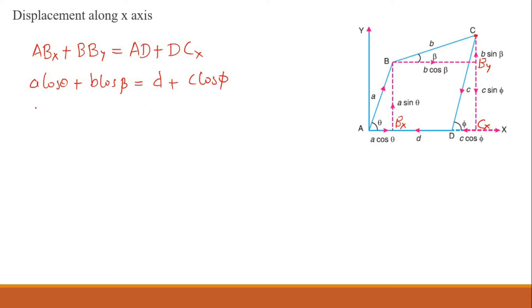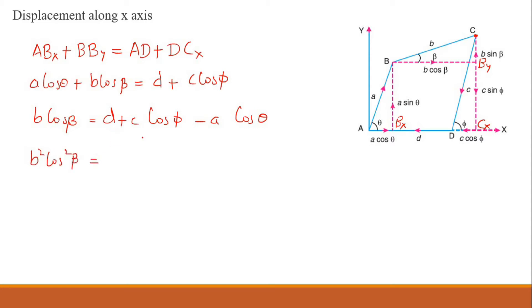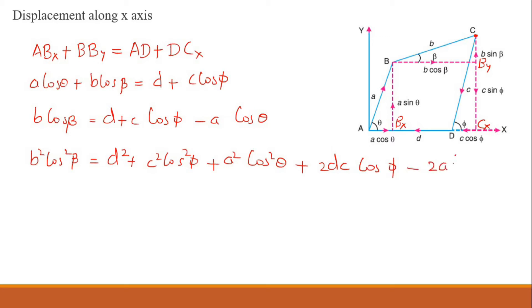Rearranging: B cos beta equals D plus C cos phi minus A cos theta. Squaring this equation, B² cos² beta equals D² plus C² cos² phi plus A² cos² theta plus 2DC cos phi minus 2AD cos theta minus 2AC cos theta cos phi. This is our first equation.